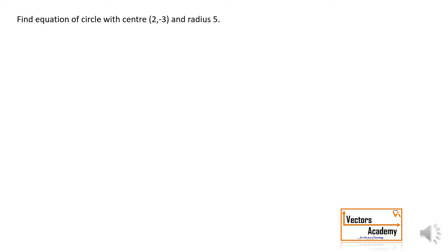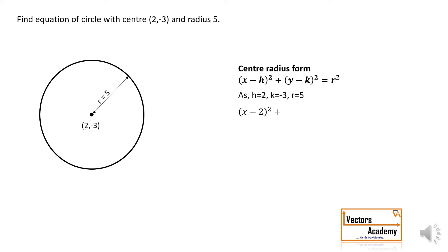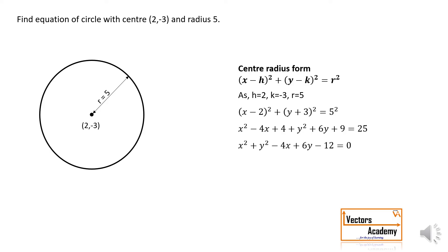In this question we need to find the equation of a circle whose center is (2, -3) and the radius is 5. We know both the center and the radius, so we use the center-radius form: (x - h)² + (y - k)² = r². Substituting the values of h, k, and r and simplifying, we get x² + y² - 4x + 6y - 12 = 0.